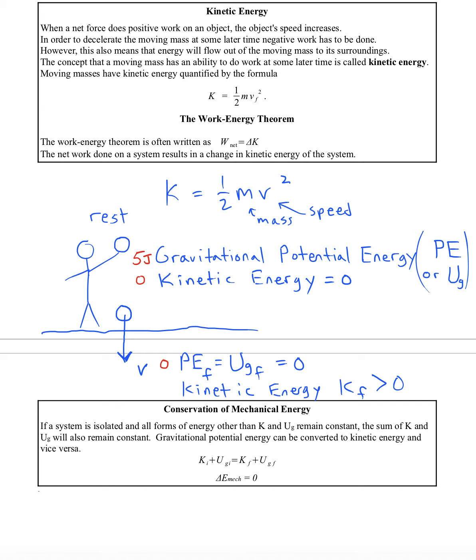The concept is conservation of mechanical energy. And the answer here to that question is five joules. So if a system is isolated and all forms of energy other than K and UG remain constant, then the sum of the kinetic energy and the gravitational potential energy will remain constant throughout time.